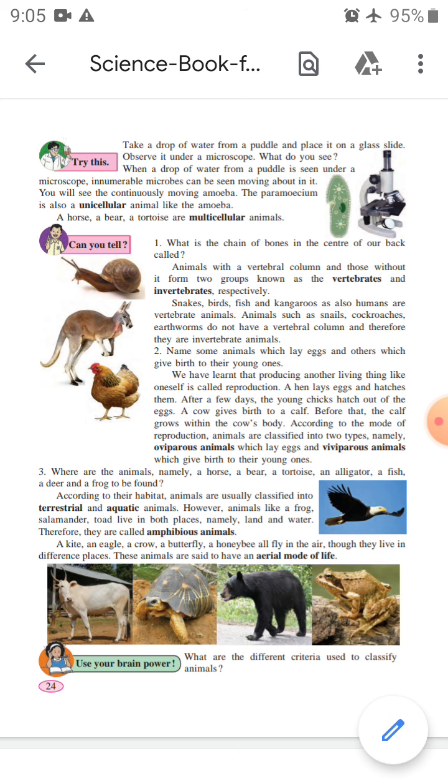Oviparous animals which lay eggs, and viviparous animals which give birth to their young ones. Where are animals, namely a horse, a bear, a tortoise, an alligator, a fish, a deer, and a frog to be found?